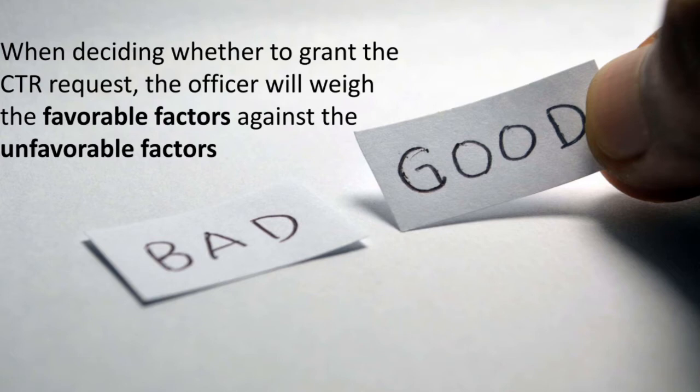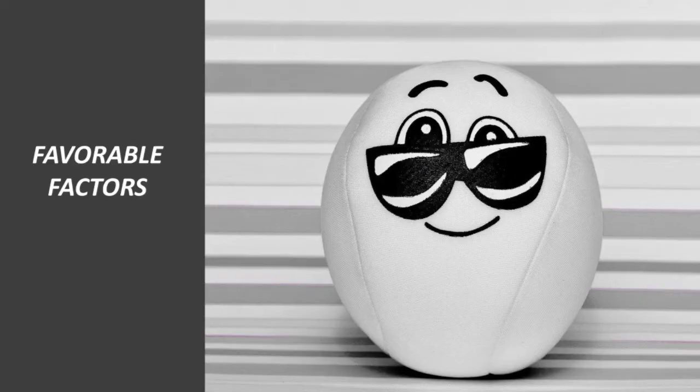Unlike the I-601 immigrant waiver for unlawful presence and fraud or willful misrepresentation, the I-212 does not require you to have a qualifying relative who will suffer extreme hardship if you are not admitted to the United States. Still, having close family ties in the US is a favorable factor in some cases. When deciding whether to grant the CTR request, the officer will weigh the favorable against the unfavorable factors. Favorable factors include: unusual hardship to your US citizen or permanent resident relatives, yourself, or your employer in the US; your family responsibilities; length of lawful presence in the US and the status you held; and your respect for law and order.